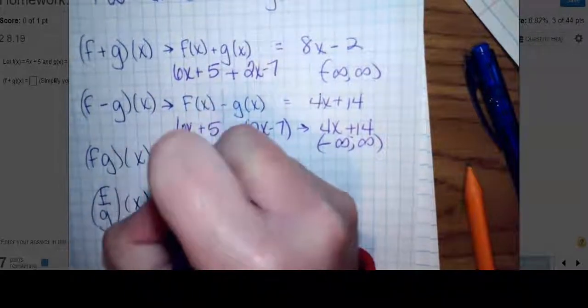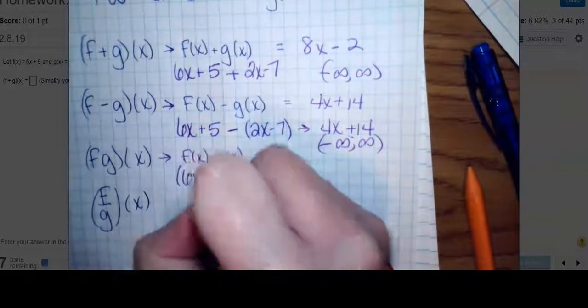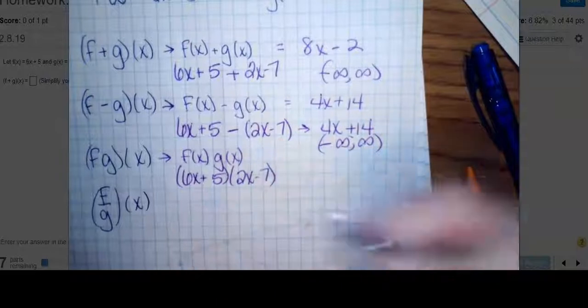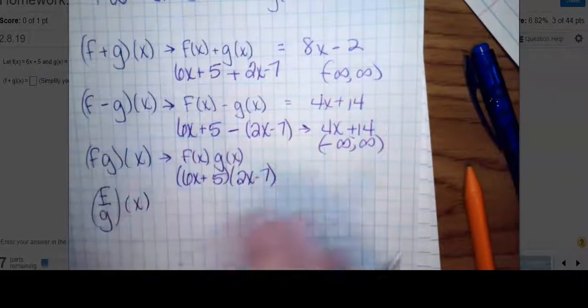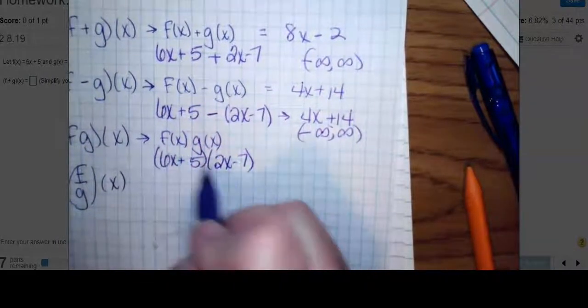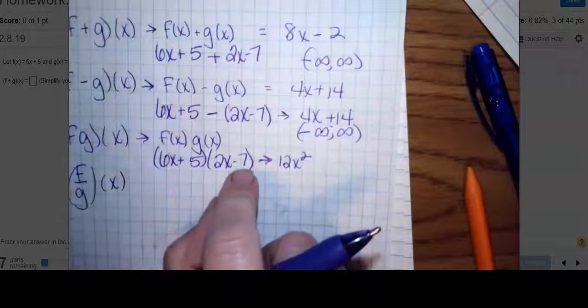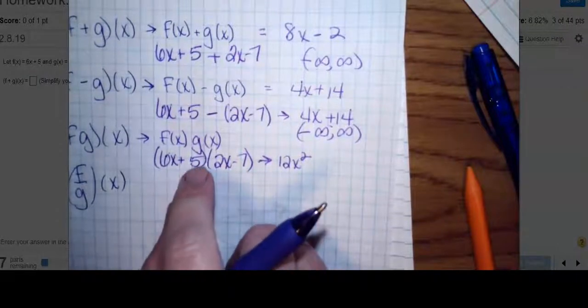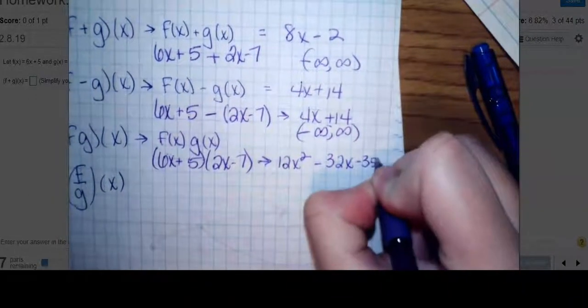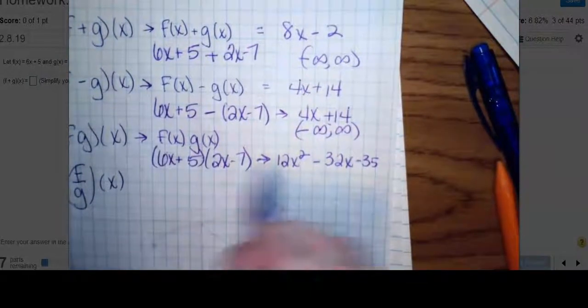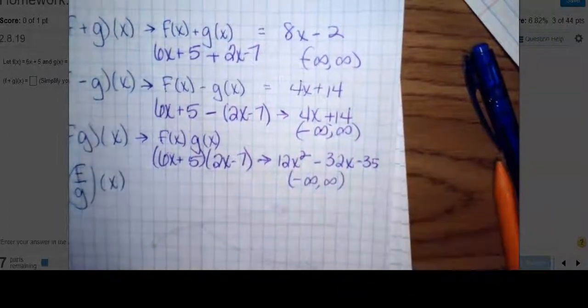Now I'm supposed to multiply. That's f(x) times g(x). I've got (6x+5) times (2x-7). I'm going to foil this. Because of time constraints, I'm combining like terms as I go. 6x times 2x gives me 12x². 6x times -7 is -42x. 2x and 5 is 10x, giving me -32x. 5 and -7 gives me -35. What's your domain? I don't see variables in denominators or under even roots. My domain is negative infinity to positive infinity, or all real numbers.